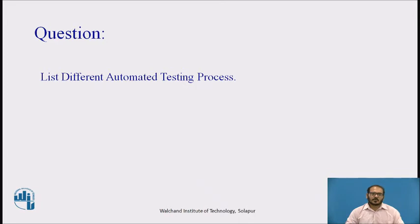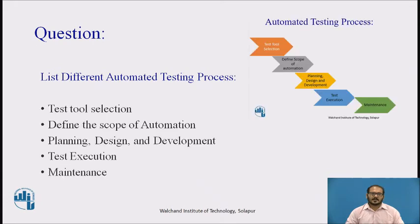Let us pause the video and answer the question: list the different automated testing processes in a software testing life cycle. The answer is: test tool selection, define the scope of automation, planning design and development, test execution, and maintenance.